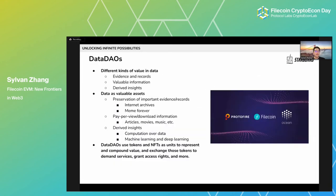Another opportunity is data DAOs. Many speakers have already addressed this topic, so I want to bring some different perspectives. We often hear that data is the most important and valuable asset in the 21st century, so creating a DAO around data assets seems very reasonable. From my perspective, there are generally three kinds of value in data: the value in evidence and record, the value in information, and the value in derived insights from machine learning or computation over data.